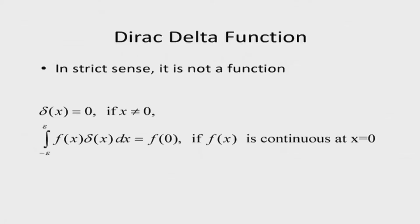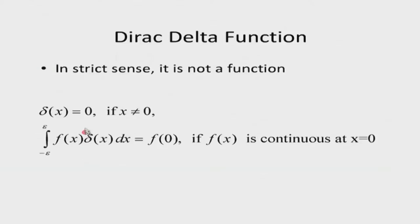The definition of the Dirac delta function: when the value of its argument is not equal to zero, delta(x) equals zero. At x equal to zero, I do not define the function, but I define something special: if you integrate any function f(x) multiplied by delta(x), over any range that includes the point where the argument is zero, the result equals simply the value of the function at that point — that is, f(0). We require f to be continuous at x = 0.